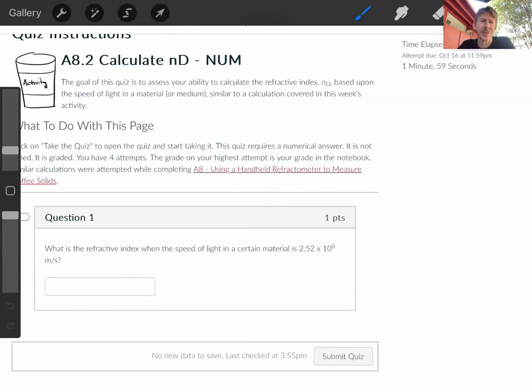This question asks, what is the refractive index when the speed of light in a certain material is 2.52 times 10 to the eighth meters per second?